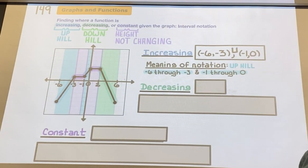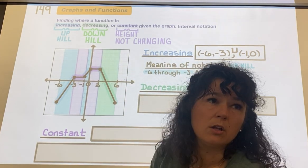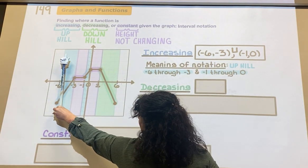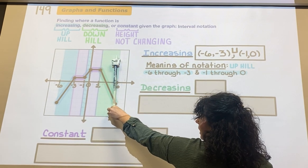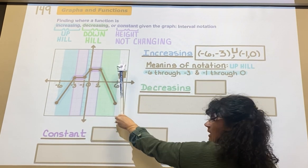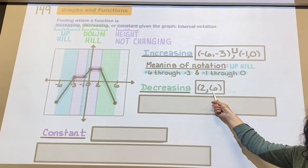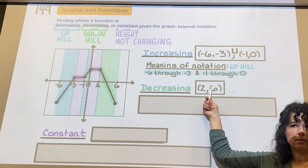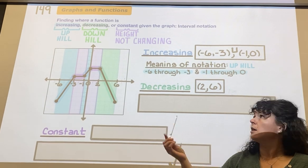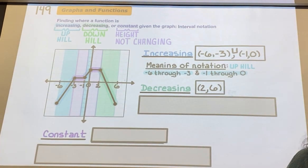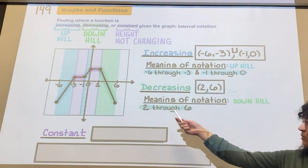Now decreasing - we're going downhill only right there. Where does the downhill section start on the x-axis? It starts at 2, and then we're no longer going downhill after 6, so this is 2 through 6. This is not 2 up 6, this is from 2 through 6. Parentheses are always used for increasing and decreasing.